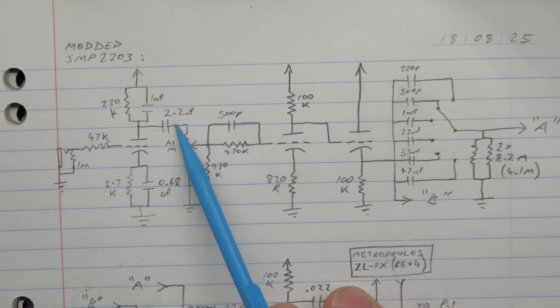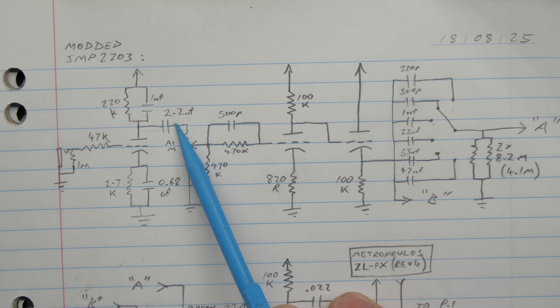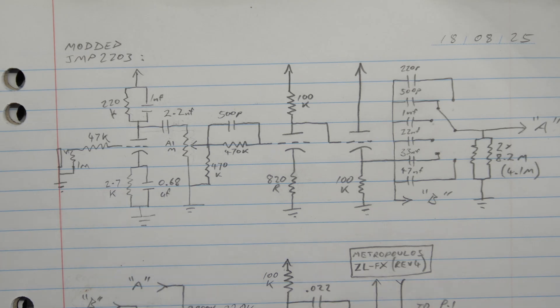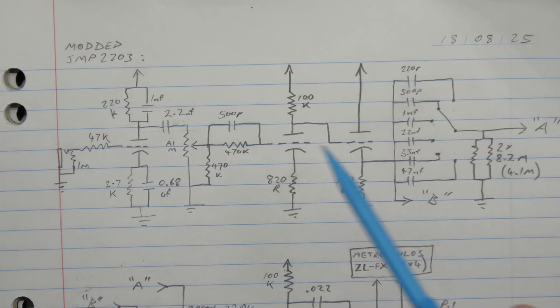2.2 nanofarad coupler on the output of the first stage. That would severely limit the bottom end coming from that first stage. I'd have to do the calcs, but that would have a pretty high cutoff. It could have been an error. Maybe they were reaching for a 22 nano, as is typical pretty much all throughout most Marshall topologies. They might have accidentally picked up a 2.2, but that was that SOZO cap that was in there. So we've removed that and replaced that with a 22 nano.